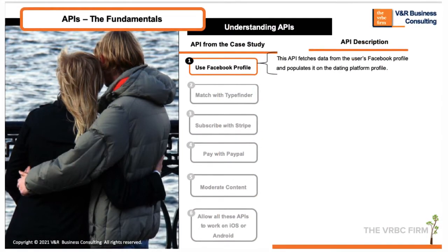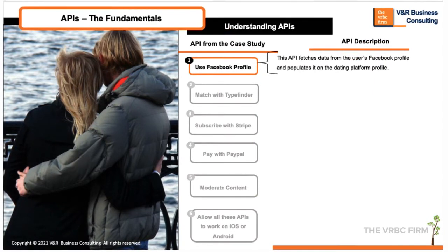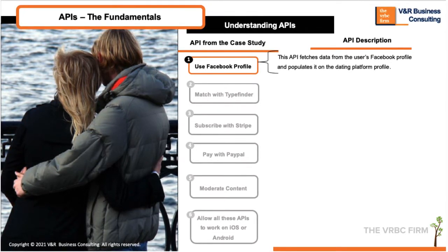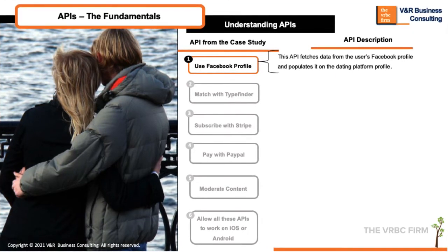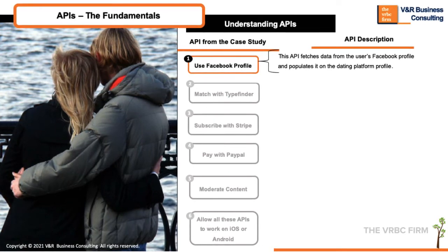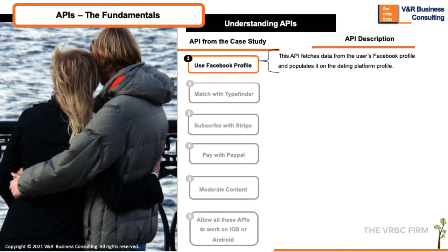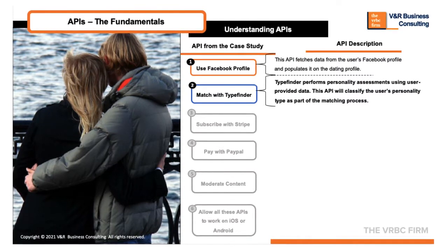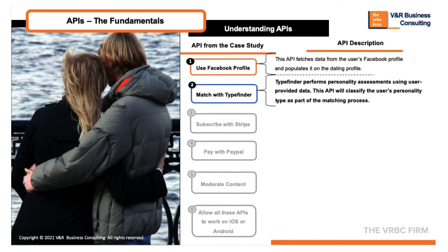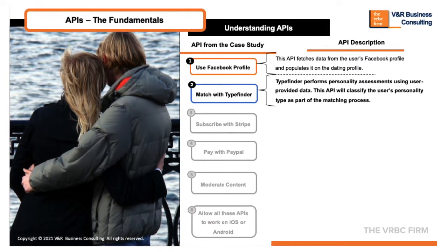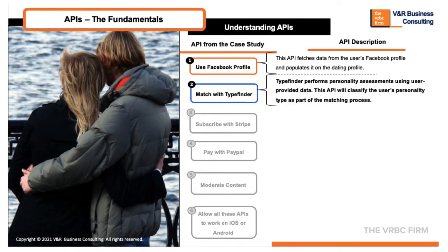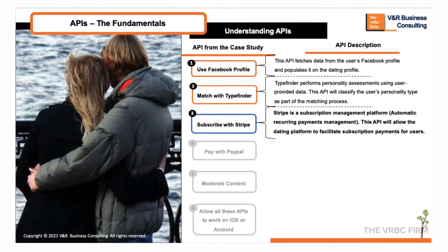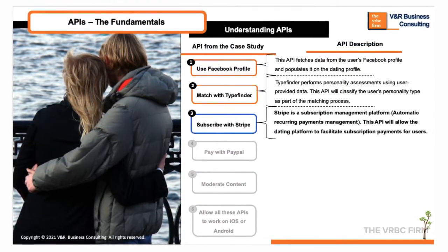Now we get into the explanation of how these APIs help us get our dating platform up and running. Instead of boring the user with a long registration process, you can give them the option of using info from their Facebook profile — your dating platform will fetch the data after getting the user's consent. Instead of hiring psychologists to design a personality profiling model from scratch, you might use an API to access another platform's algorithm where there's already a credible model performing the personality classification function. The same process applies with integrating subscription capability on the platform.